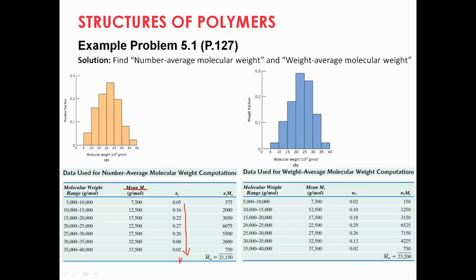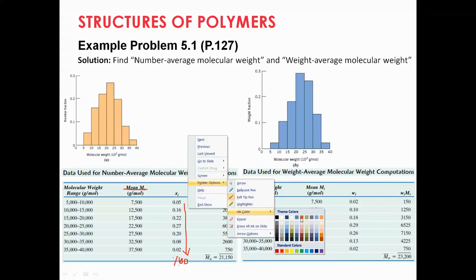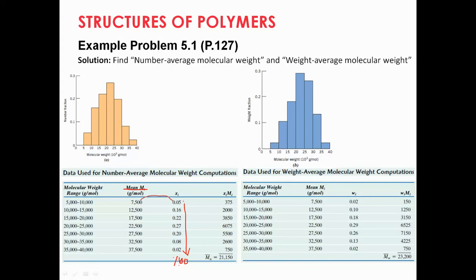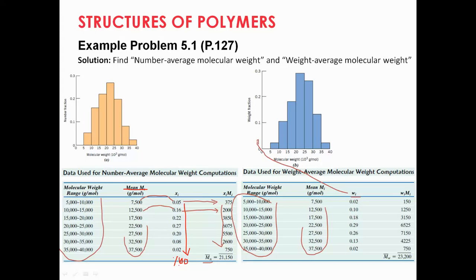Then you multiply M_i by X_i to get X_i·M_i for each row, and then add them all up. The summation gives you M̄_N — the number average molecular weight. A similar approach is used for W_i. The mean values column is the same in both tables. W_i is read from the weight fraction curve, and W_i·M_i is calculated for each row. Adding them up gives you the weight average molecular weight M̄_W using the summation formula.